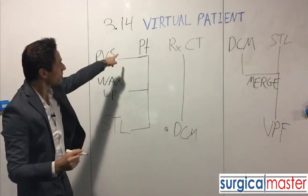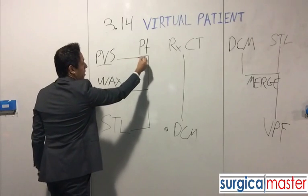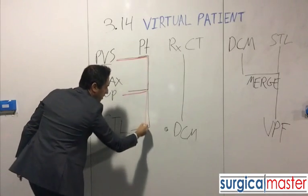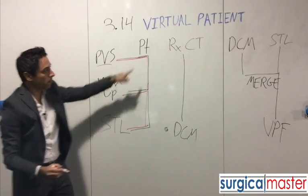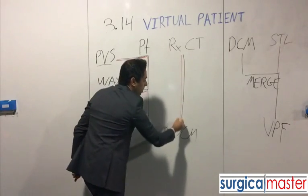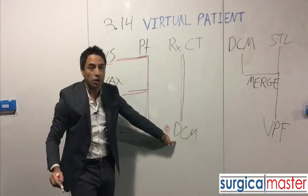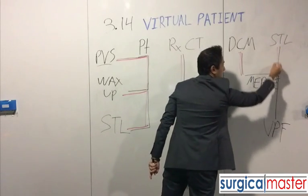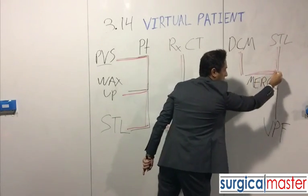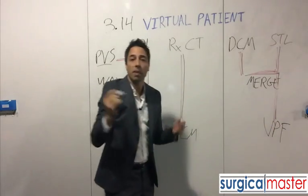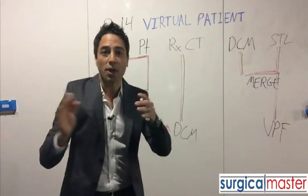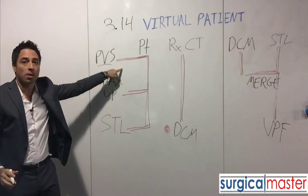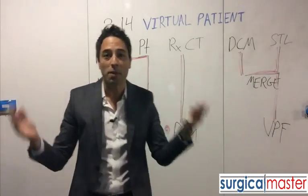So let's look at it again. We have our patient missing one or more teeth — we get the PVS, the wax-up, and eventually the STL data. Then we refer the patient for a scan, we get the DICOM data — the DCM files. We take the DCM and the STL, we merge them, and eventually we get the virtual patient file. And it just so happens, if you look at the virtual patient flow, we are looking at 3-1-4. I don't know how it happened — it was probably just by accident.